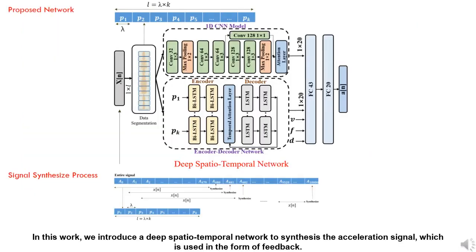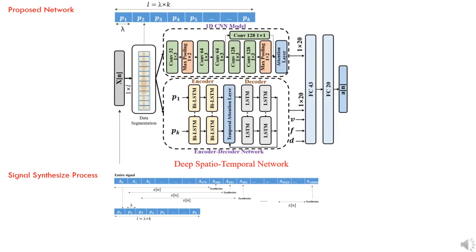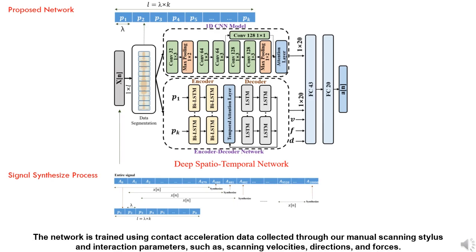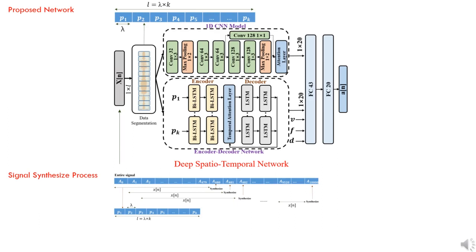In this work, we introduce a Deep Spatio-Temporal Network to synthesize the acceleration signal, which is used in the form of feedback. The network is trained using contact acceleration data collected through our manual scanning stylus and interaction parameters, such as scanning velocities, directions, and forces.